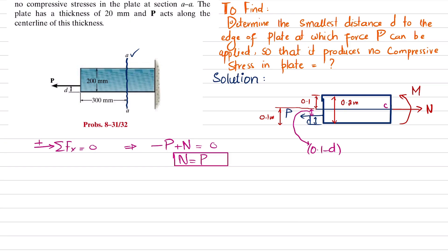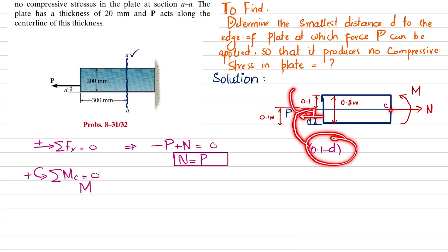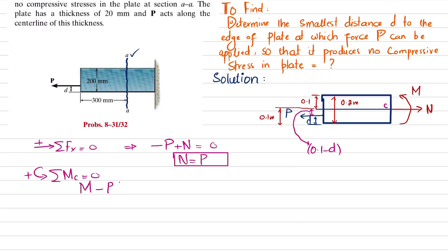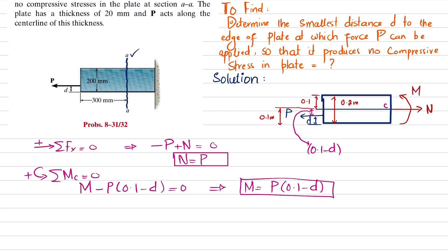Now let's find the moment. Let this point be point C. The sum of all moments about point C must equal zero, taking counterclockwise as positive. Moment M is counterclockwise so it is positive, and the moment due to force P is clockwise so it is negative: M minus P times (0.1 minus d) equals zero. Therefore M equals P times (0.1 minus d).